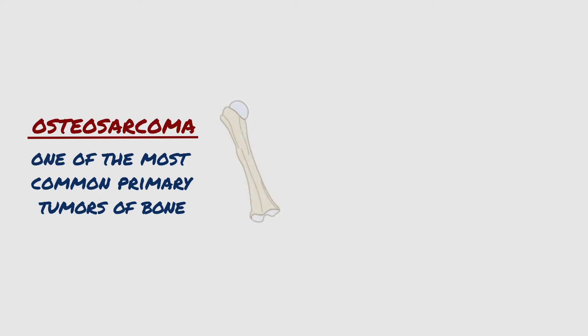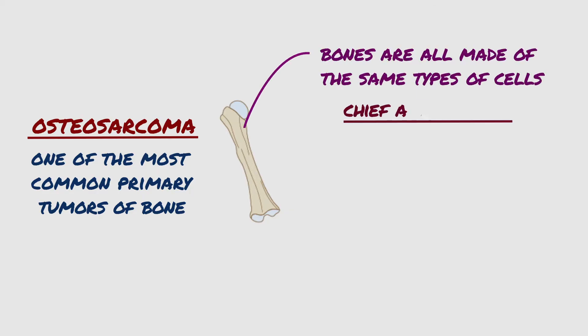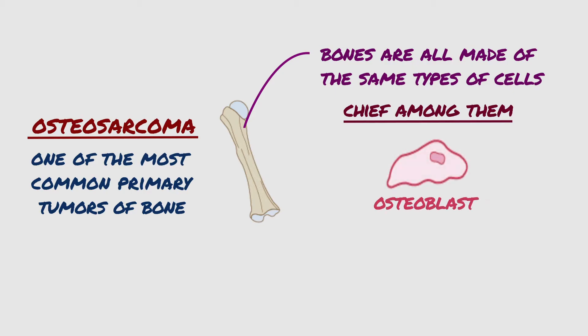Osteosarcoma represents one of the most common primary tumors of bone. Even though the bones vary in size and shape, they are all made of the same types of cells, and chief among them are osteoblasts, which build up new bone.